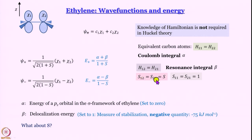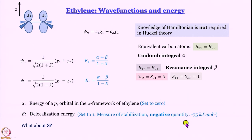S12 and S21 are the overlap integrals, and S11 and S22 are just 1 because the atomic orbitals are normalized. Alpha is set to zero — it is essentially the energy of a pz orbital in the sigma framework of ethylene. Beta, the delocalization energy, has a value of about minus 75 kilojoules per mole, though you do not need to remember that value. What is important is that beta is a negative quantity.